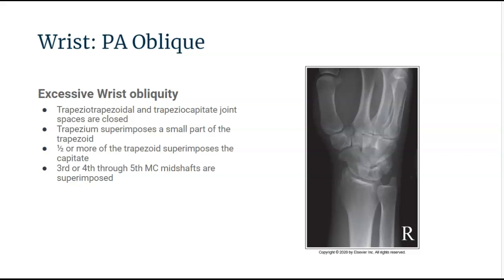In excessive wrist obliquity, we will see that the trapezio-trapezoidal and the trapeziocapitate joint spaces are closed. The trapezium and the trapezoid are overlapping, as well as the capitate and the trapezoid. The trapezium will superimpose a small part of the trapezoid. Half or more of the trapezoid superimposes the capitate, and the third or fourth through fifth metacarpal midshafts are superimposed, demonstrating that the wrist is in excessive obliquity.